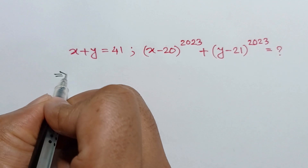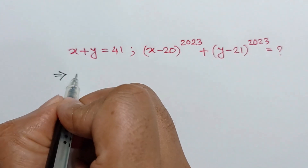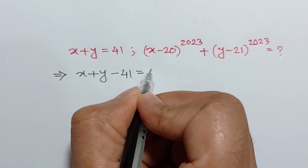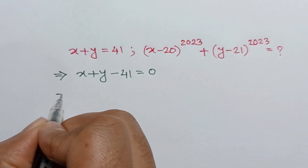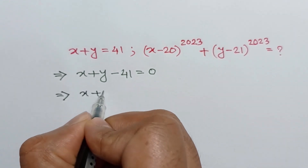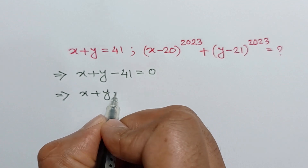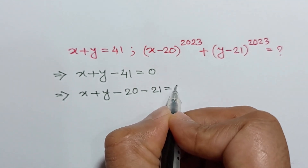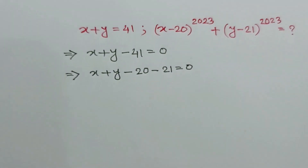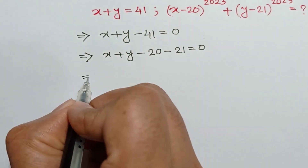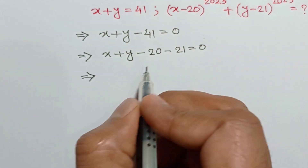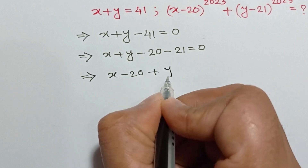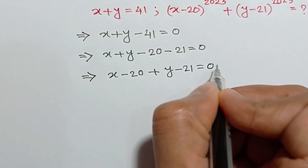Taking 41 to the left side, we will have x plus y minus 41 is equal to 0. Or, 41 can be written as 20 plus 21, so rearranging it, we will have x minus 20 plus y minus 21 is equal to 0.